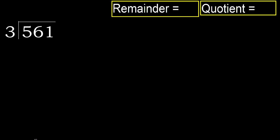561 divided by 3. 5 is not less, therefore with 5: 3 multiplied by which number is nearest but not greater? 3 multiplied by 2 is 6, which is greater. Multiply by 1: 3. 3 is not greater. Subtract: 5 minus 3 equals 2. Next, bring down: 26.